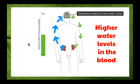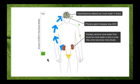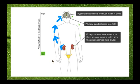When we have higher levels of water in the blood — shown by large blue arrows — the hypothalamus detects this and stops or decreases the release of ADH. As a result, the amount of ADH in the blood is now low, and the kidneys remove more water from the blood. More water is lost in the urine and the urine becomes more dilute. When we go to the bathroom, we produce a large volume of urine with a much lighter straw colour because there's more water mixed in with the substances being excreted.